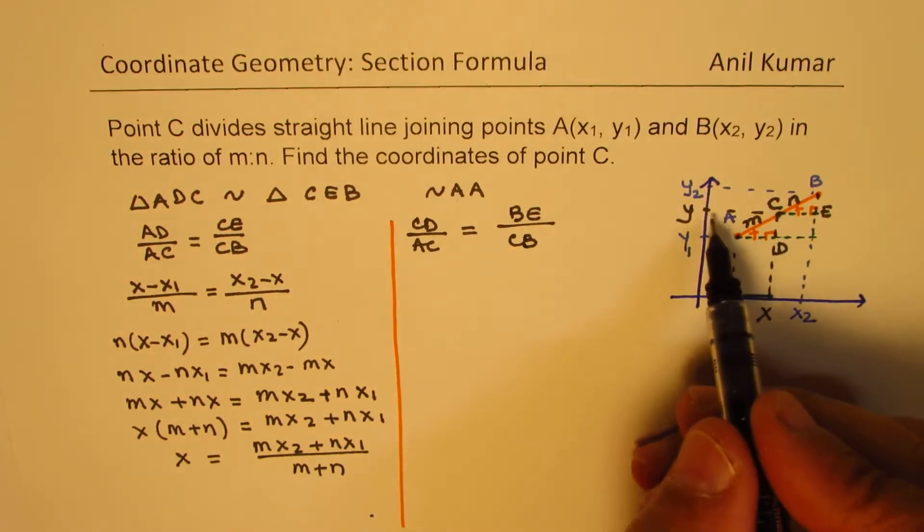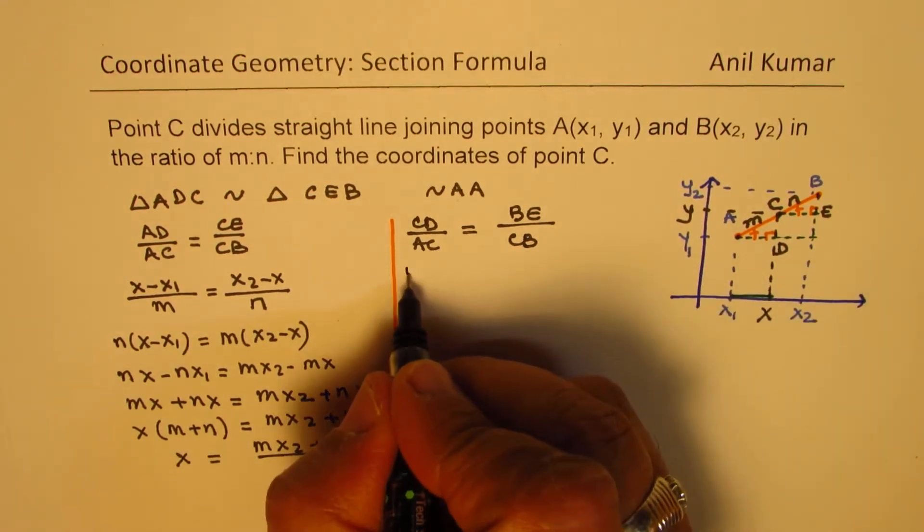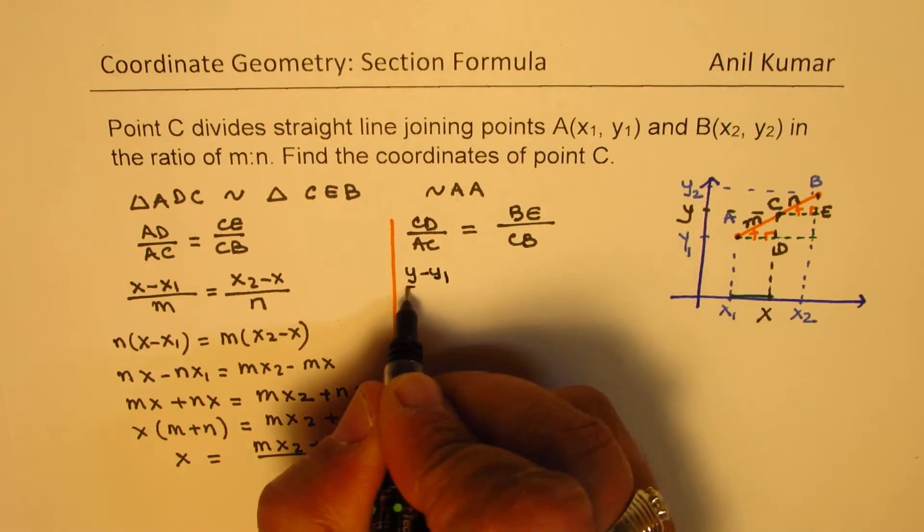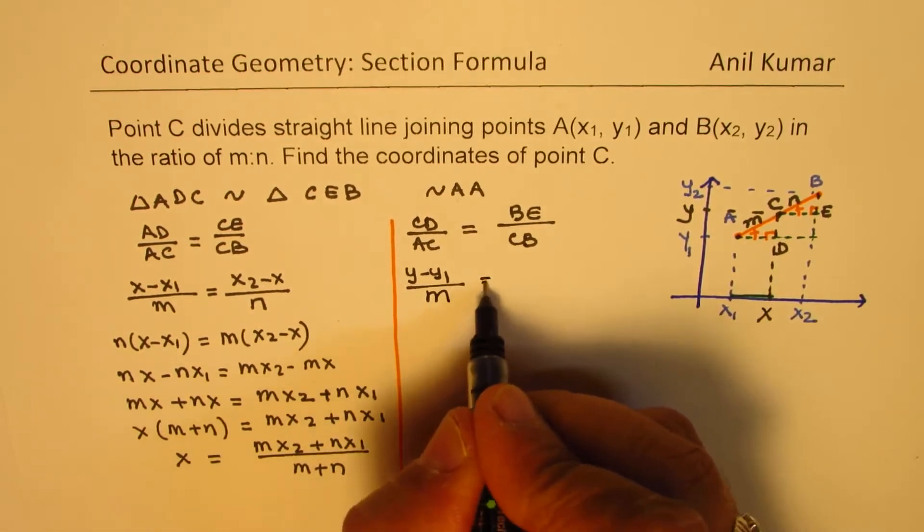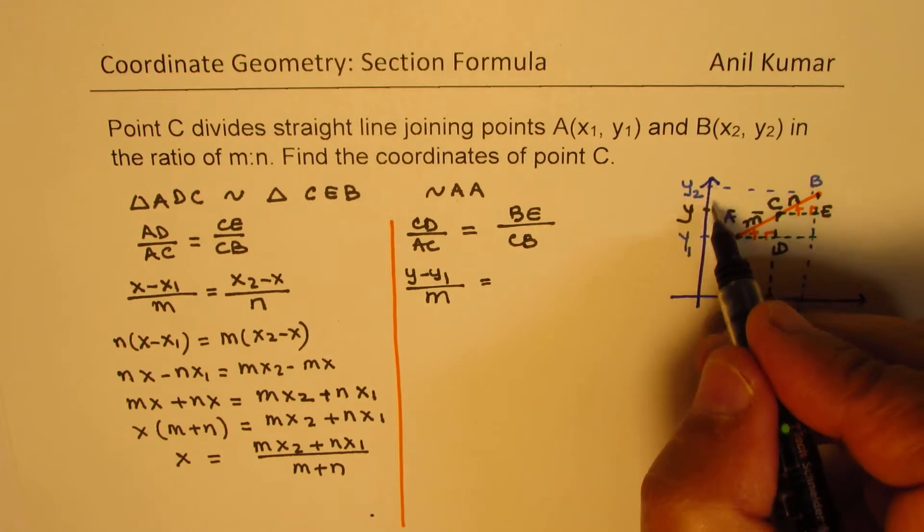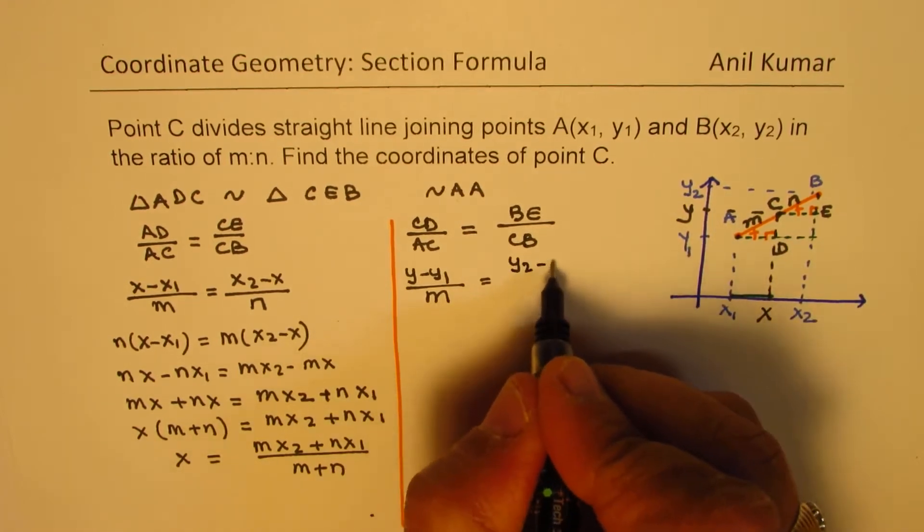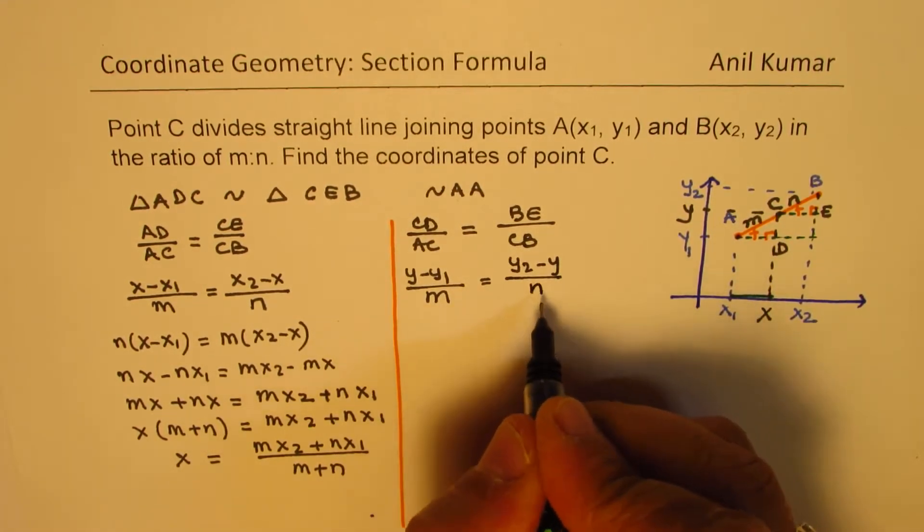Now CD is (y minus y1), AC is m, BE is (y2 minus y) over n, cross multiply.